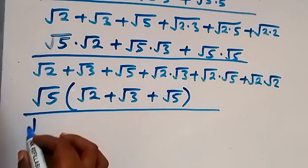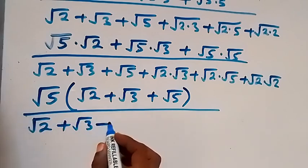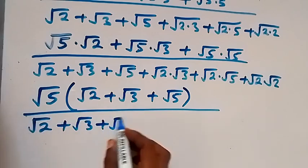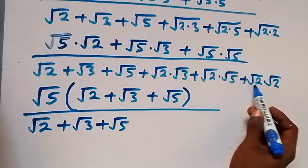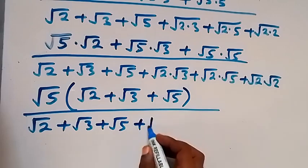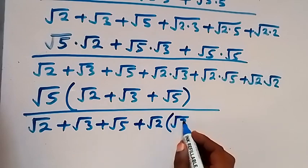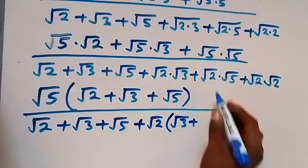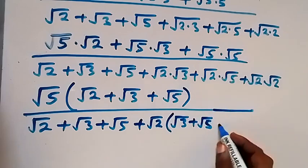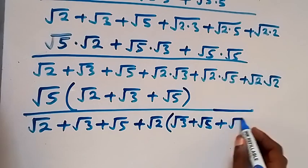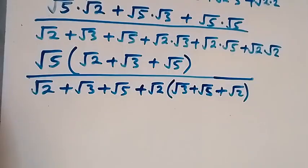The denominator is the same way — that's root 2 plus root 3 plus root 5. From this side we have root 2 common, so plus root 2 into bracket: what is left here is root 3, plus what is left here is root 5, then plus what is left here is root 2, then close bracket.